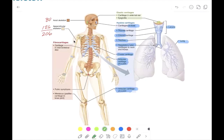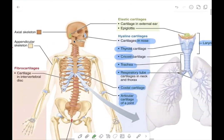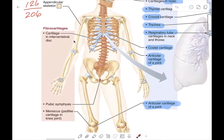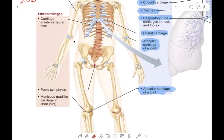The next type is elastic cartilage. The two main examples are the external ear and the epiglottis. The epiglottis is especially important — it acts like a sphincter to close off the trachea when food is going down the esophagus, so it doesn't go down the wrong tube. Fibrocartilage serves as a shock absorber in the intervertebral disc, the pubic symphysis, and the meniscus, which is a pad-like cartilage in the knee joint.